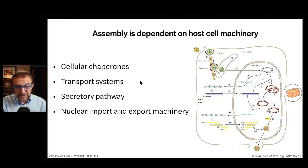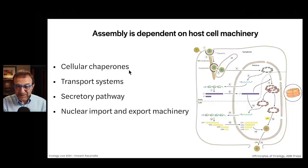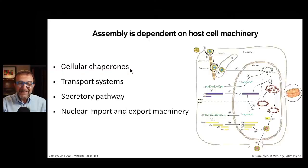Some of the cell machinery required for assembly — by no means all — includes cellular chaperones. The chaperone is the word. There are cellular chaperones that are specifically proteins and they make sure that the folding reactions occur properly. It's very interesting that cellular chaperones are making sure that virus proteins are folded correctly. There are certainly virus-encoded chaperones as well, but there are many host chaperones.